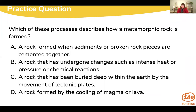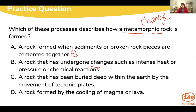Let's do a couple of practice questions. The first: which of these processes describes how a metamorphic rock is formed? Think of that word — metamorphic — and the caterpillar that undergoes some type of change. Looking at our answer choices: A, a rock formed when sediment or broken pieces are cemented together — from part two, that's the sedimentary rock cycle. B, a rock that has undergone changes such as intense heat, pressure, or chemical reactions. C, a rock buried deep within the earth by the movement of tectonic plates. D, a rock formed by cooling of magma or lava — that one is igneous.